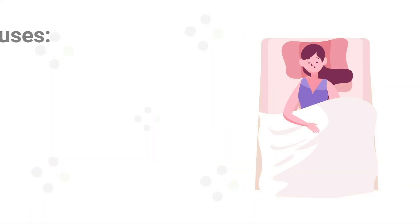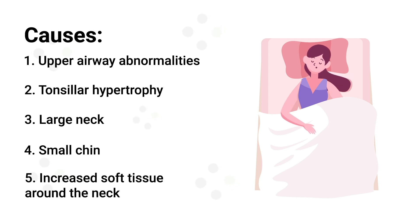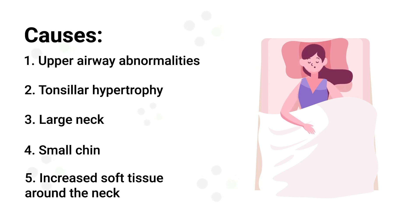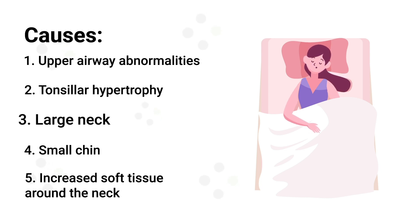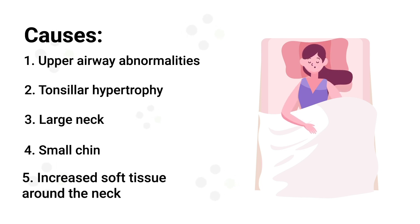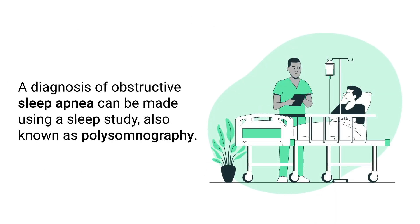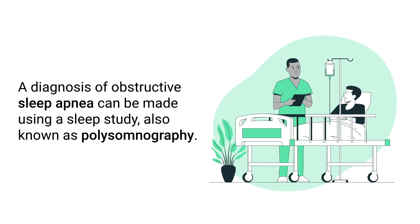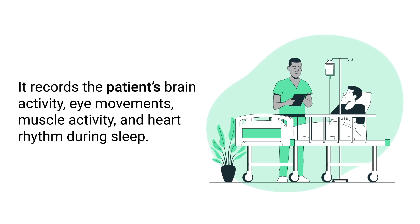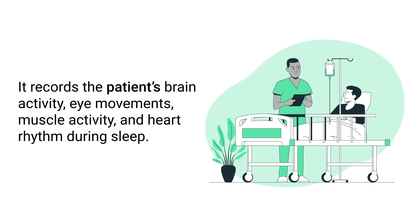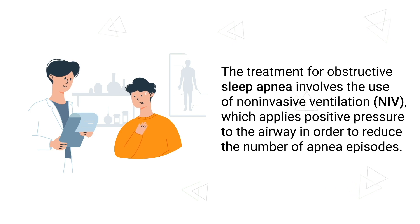Some examples of common causes of obstructive sleep apnea include upper airway abnormalities, tonsillar hypertrophy, a large neck, small chin, or increased soft tissue around the neck. A diagnosis of obstructive sleep apnea can be made using a sleep study, also known as polysomnography, which records the patient's brain activity, eye movements, muscle activity, and heart rhythm during sleep.